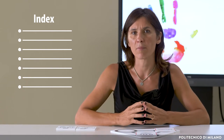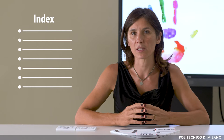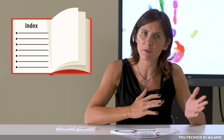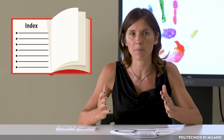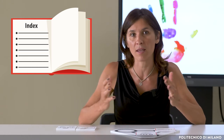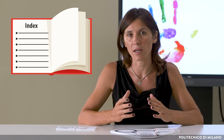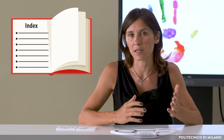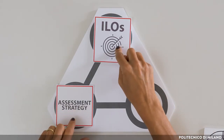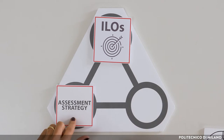But if we think about what happens when writing a book, the index is built up as the contents take shape and we get a clear view at the end of it. When designing a course, we need to start from the Intended Learning Outcomes and the Assessment Strategy and then move on to defining the Macro and Micro Contents.